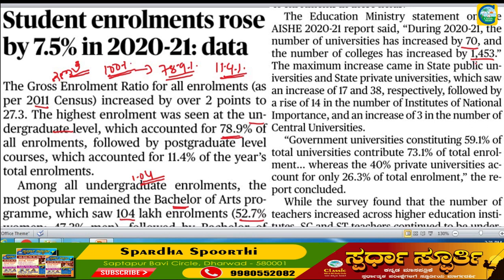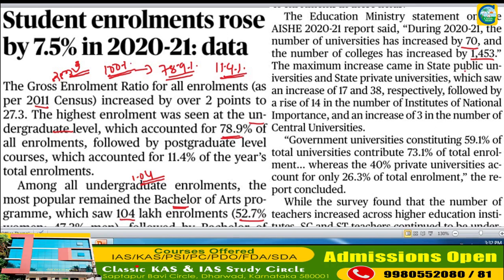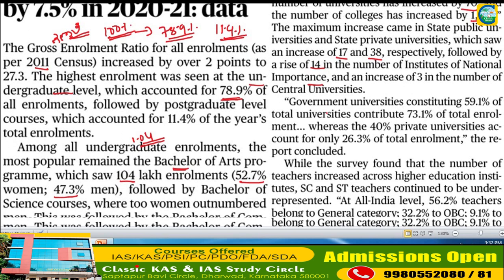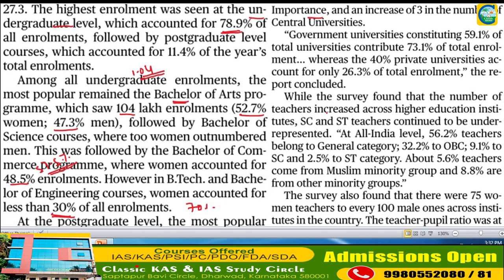The COVID-19 pandemic affected state public universities significantly. In state and central universities, the economy of enrollment changes. Government and state universities, institutions of national importance, and central universities - Kendra Vishwavidyalayas - saw growth of around 2.1 percent. Private institutions showed a different percentage growth in enrollment.